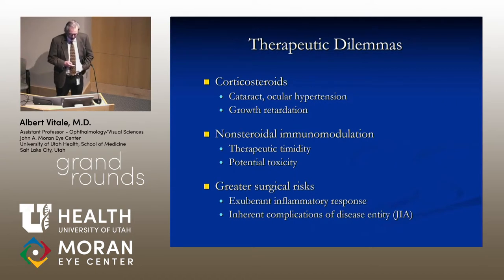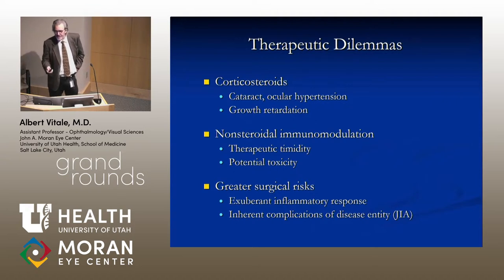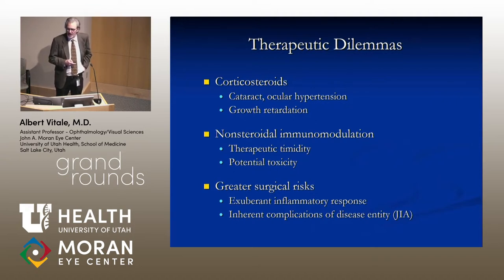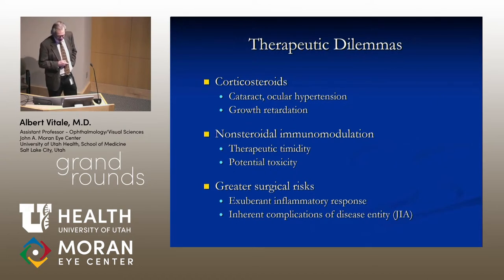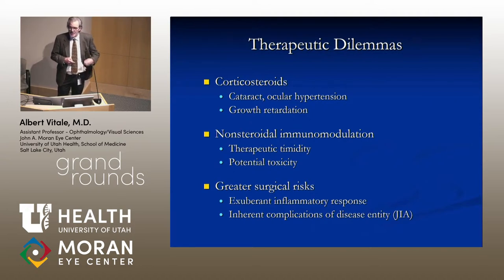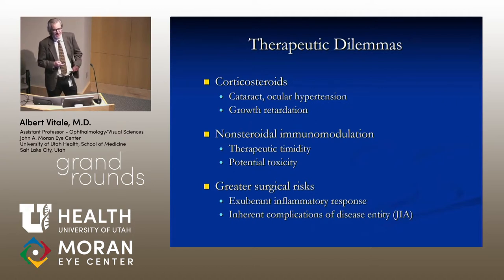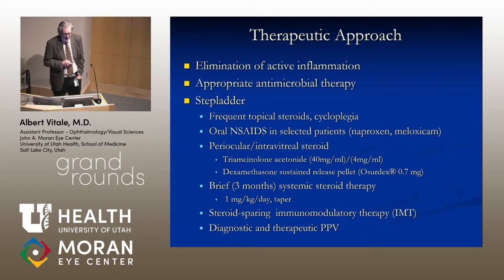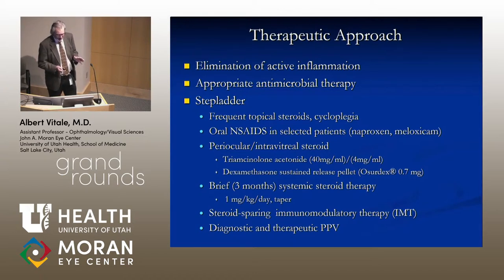Therapeutic dilemmas surround the use of corticosteroids due to concerns about inducing structural complications such as cataract and ocular hypertension, and the use of systemic steroids inducing growth retardation, versus therapeutic timidity with non-steroidal immunomodulation or fear of toxicity. Kids represent greater surgical risk — they have a more exuberant inflammatory response to surgical trauma, plus there are inherent complications associated with certain diagnoses such as JIA-associated iridocyclitis.